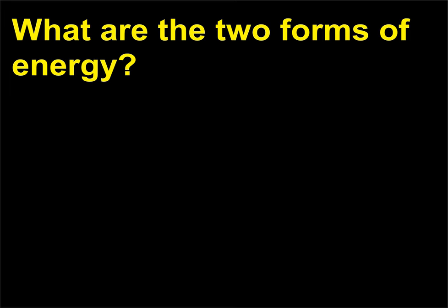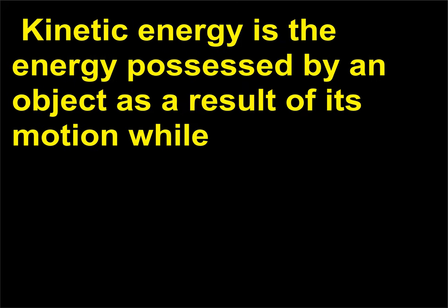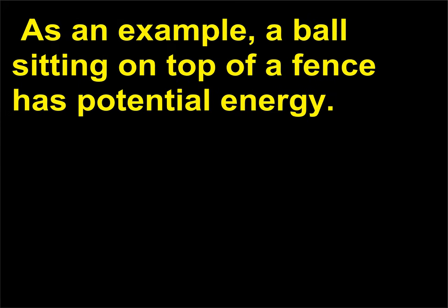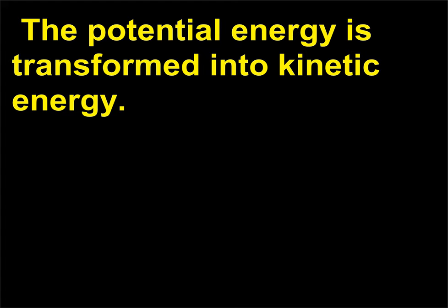What are the two forms of energy? The two forms of energy are kinetic energy and potential energy. Kinetic energy is the energy possessed by an object as a result of its motion, while potential energy is the energy possessed by an object as a result of its position. As an example, a ball sitting on top of a fence has potential energy. When the ball falls off the fence it has kinetic energy. The potential energy is transformed into kinetic energy.